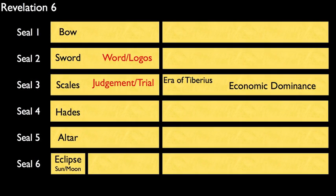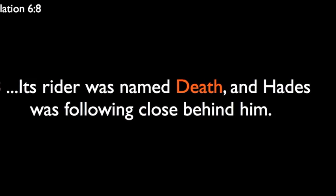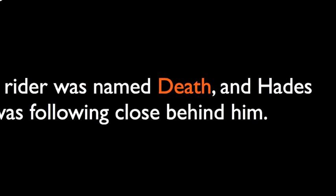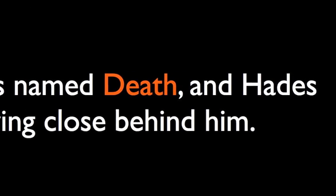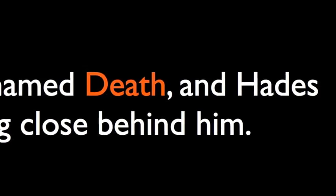In the fourth seal, the Hyades cluster was converted into Hades. For our purposes, Hades will remain. Revelation 6:8 states: 'Its rider was named Death, and Hades was following close behind him.' The usage of death here is not typical for the rest of the seals, and we will extract that into our pattern.